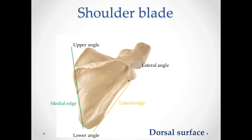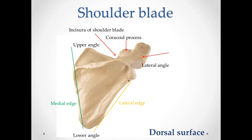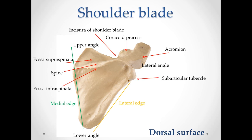The cavitas glenoidalis is slightly concave and participates in the formation of the shoulder joint. There is the incisura scapulae, the coracoid processus coracoideus — it hangs over cavitas glenoidalis — and the acromion. There is also a spine of the scapula, spina scapulae. This is a protrusion from the upper part of the posterior surface that divides the shoulder blade into the fossa infraspinata and the fossa supraspinata. We can also see the subarticular tubercle.